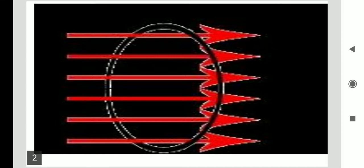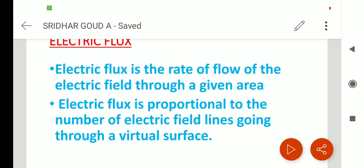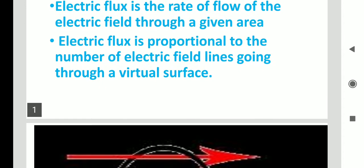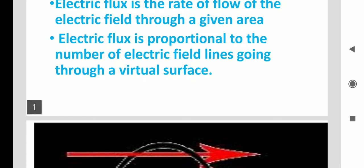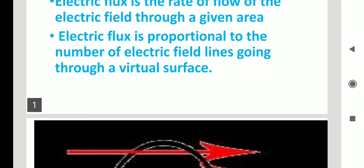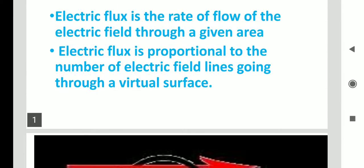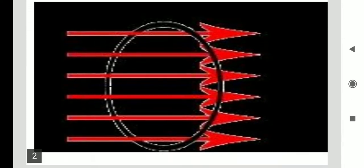The rate of flow of the electric field lines through a given area is called electric flux. Electric flux is proportional to the number of electric field lines — if more field lines are passing then flux is more, if fewer field lines are passing then flux is less. Through the certain area some electric field lines are passing; this is considered as electric flux.